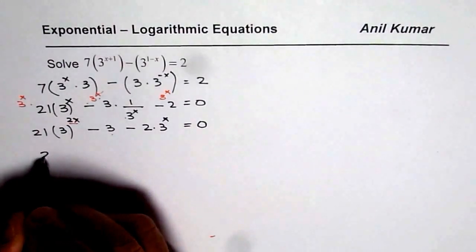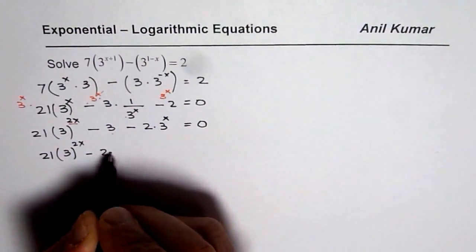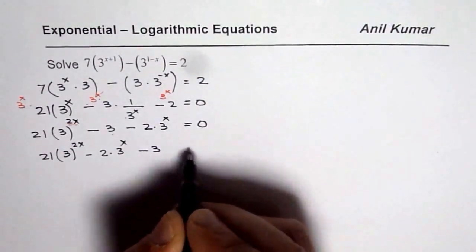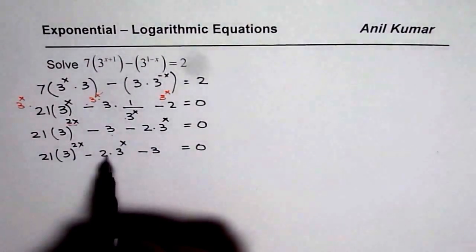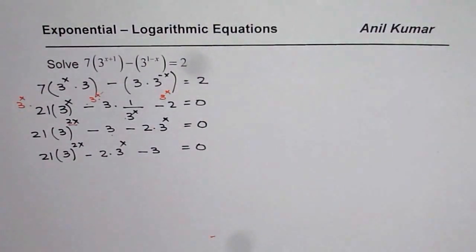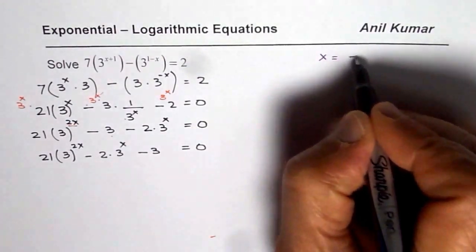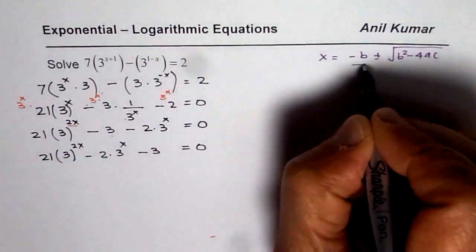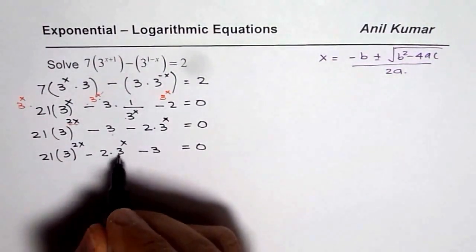By doing so we have created a quadratic equation with an exponential term. We have 21 times 3 to the power of 2x, minus 2 times 3 to the power of x, minus 3 equals to 0. We can actually solve this equation using the quadratic formula: x equals minus b plus or minus square root of b squared minus 4ac, over 2a. In this particular case our variable is 3 to the power of x.